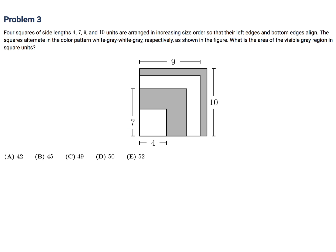Four squares of side length 4, 7, 9, and 10 units are arranged in increasing size order so that their left edges and bottom edges align. The squares alternate in the color pattern white, gray, white, gray, respectively, as shown in the figure. What is the area of the visible gray region? Well, it looks like I'll call this A and this B. It looks to me like A is going to be 7 squared minus 4 squared. So that's 49 minus 16. So that's 33.